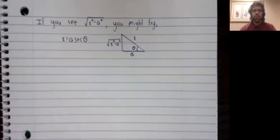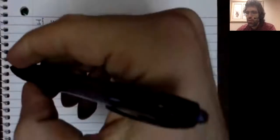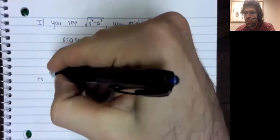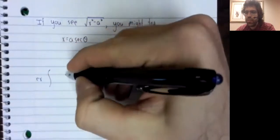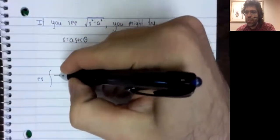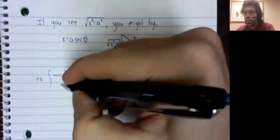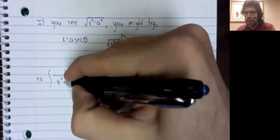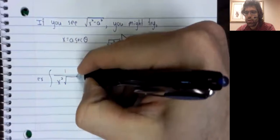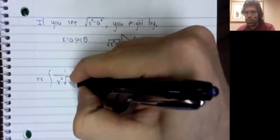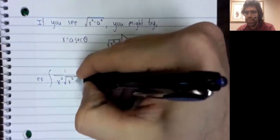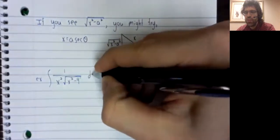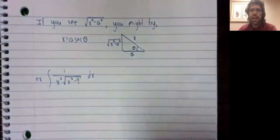In particular, let's try to find the following indefinite integral: 1 divided by x squared times the square root of x squared minus 4 dx.